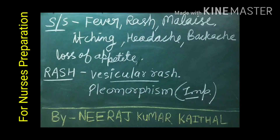In chickenpox, the rashes are of vesicular type and pleomorphism is present — this is an important characteristic of this disease. Pleomorphism is a condition in which all stages of rashes, including papule, vesicle, and crust, may be seen simultaneously at one time in the same area. Rashes appear within 24 hours of fever.